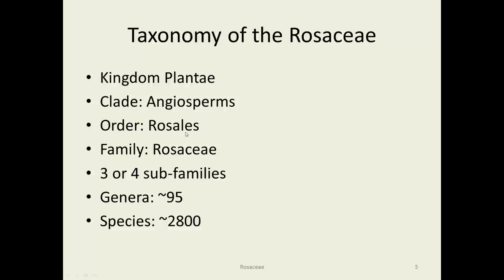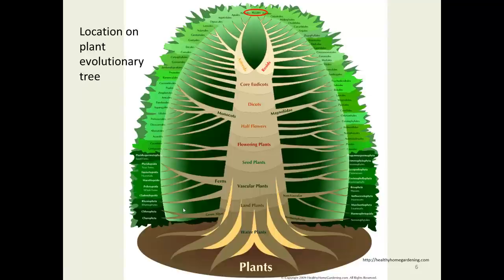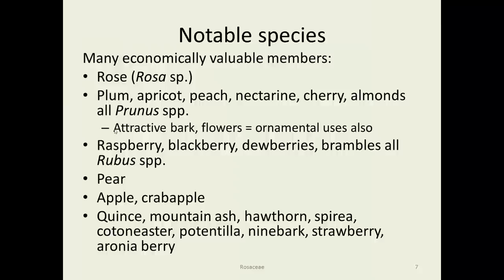Taxonomy of the Rosaceae: they are in the order Rosales, with some other families in this order. There are several subfamilies within the Rosaceae, and the genetics are fairly complicated — there's disagreement amongst the experts. There are about 95 genera and 2,800 species in this family. On the evolutionary tree, they are up near the very top, which doesn't necessarily mean they are the most evolved of all orders, but they're getting up there on the scale.